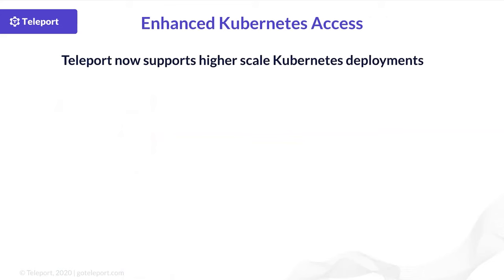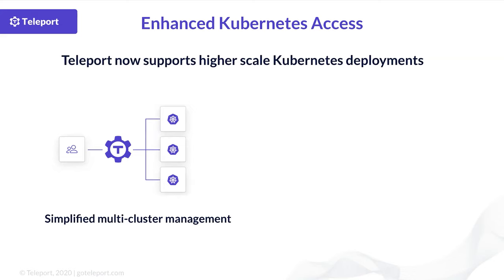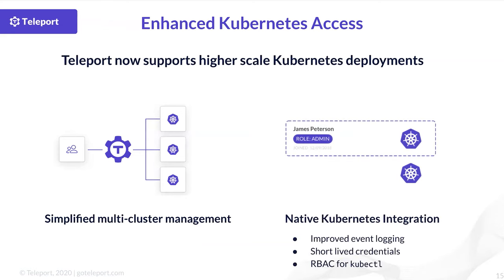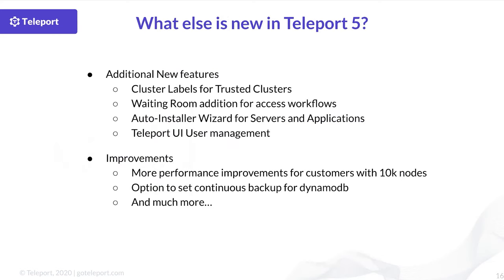We have also made substantial improvements to our Kubernetes access. It's now much easier to handle higher scale Kubernetes deployments. First, we've made it much more efficient to manage access control for multiple Kubernetes clusters using a single Teleport unified access plane. We've also improved our native integration with Kubernetes with better event logging, bringing short-lived credentials to the kubeconfig, and providing advanced RBAC mapping to Kubernetes groups and users for when you are working with kubectl.